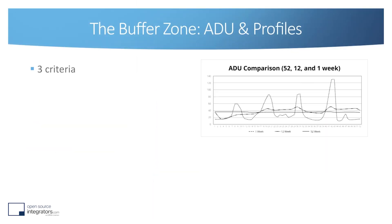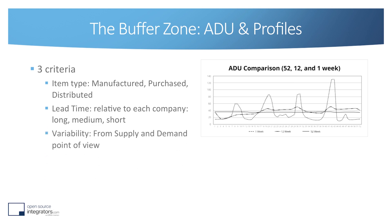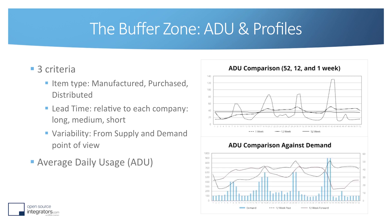So how do we compute those zones? There are two elements taken into account. First is the buffer profile. A buffer profile has three main characteristics: the type, to determine if the product is manufactured, purchased, or distributed; the lead time, where you define if it's short, medium, or long, and a factor is applied to the calculation based on this choice; and variability, whether it's low, medium, or high — which similarly influences the computation of your zones. The second element is the average daily usage, or ADU.